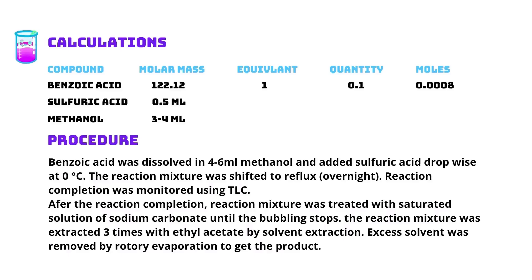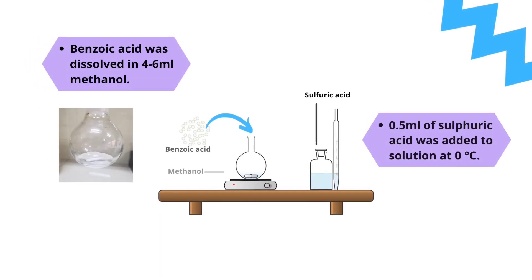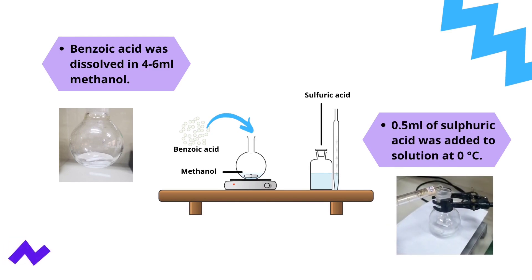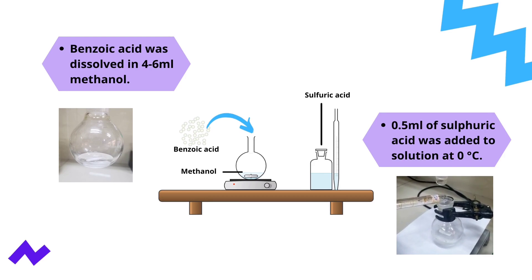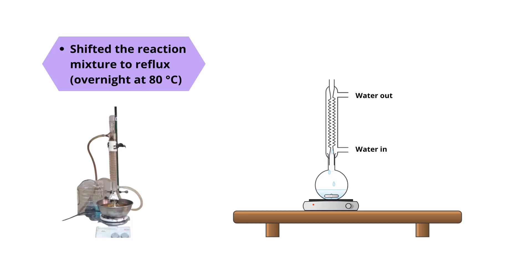Following are the calculations and procedure used for this practical. Benzoic acid was dissolved in 4 to 6 milliliters of methanol, and sulfuric acid was added dropwise at 0 degrees Celsius. The reaction mixture was then shifted to reflux at 80 degrees Celsius overnight.